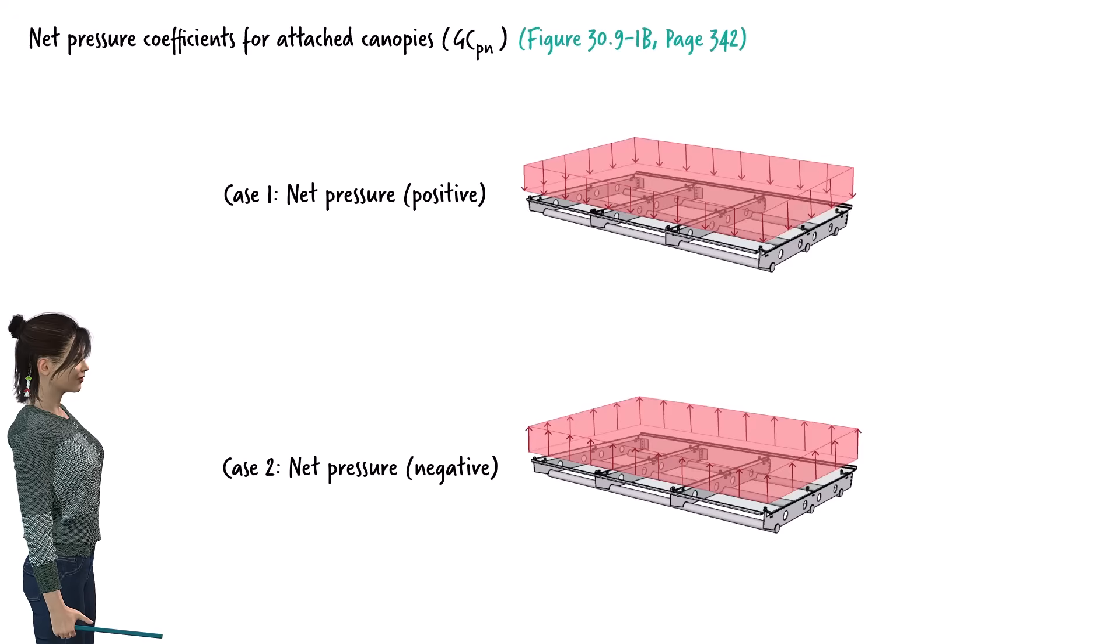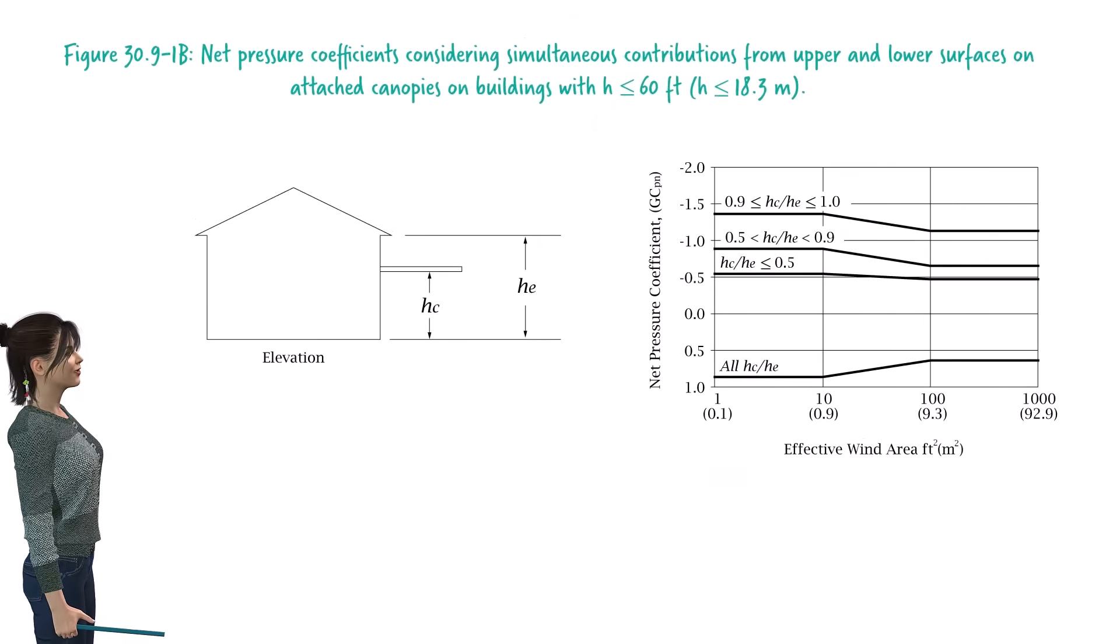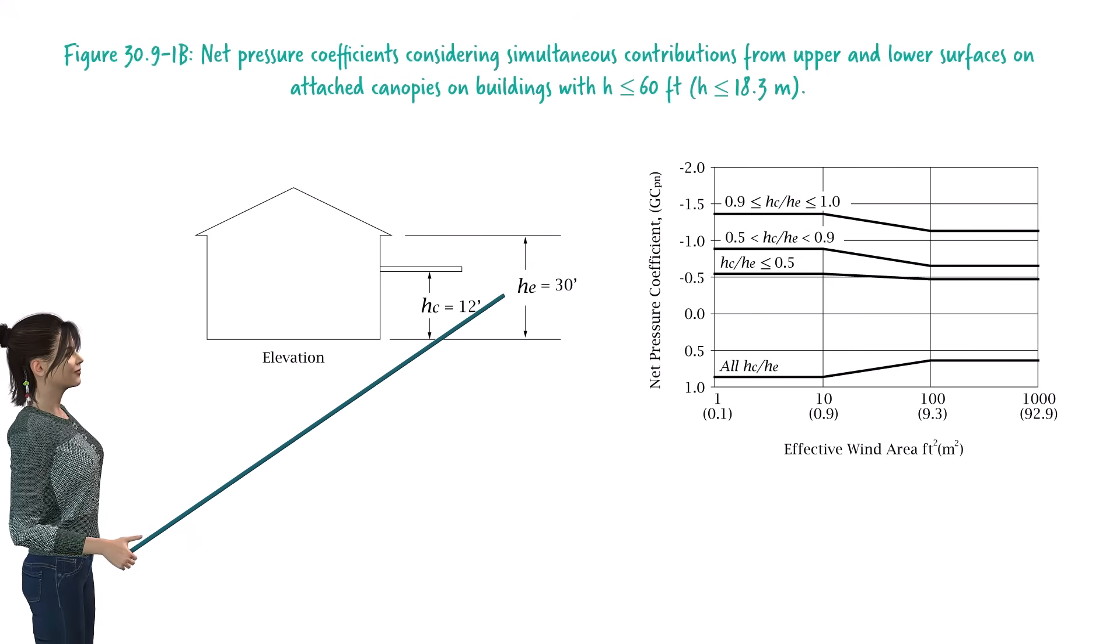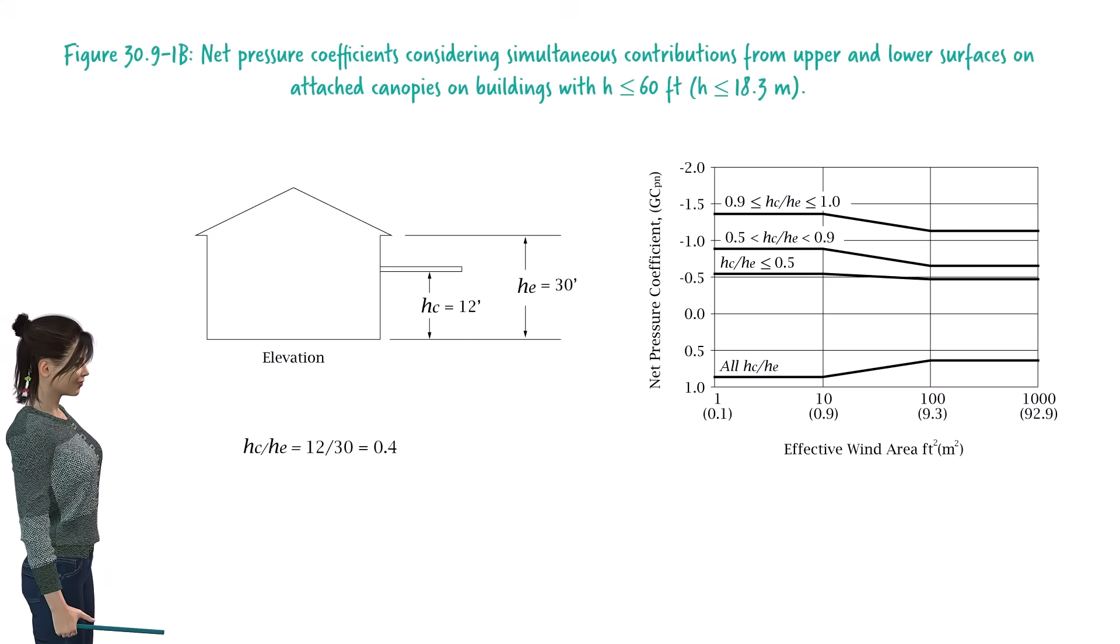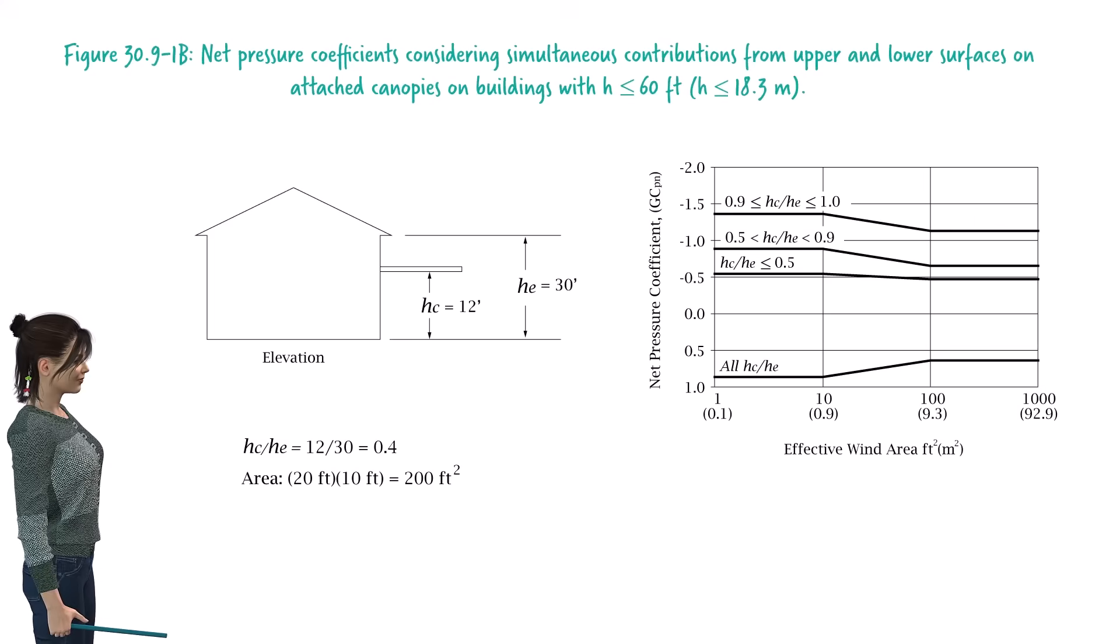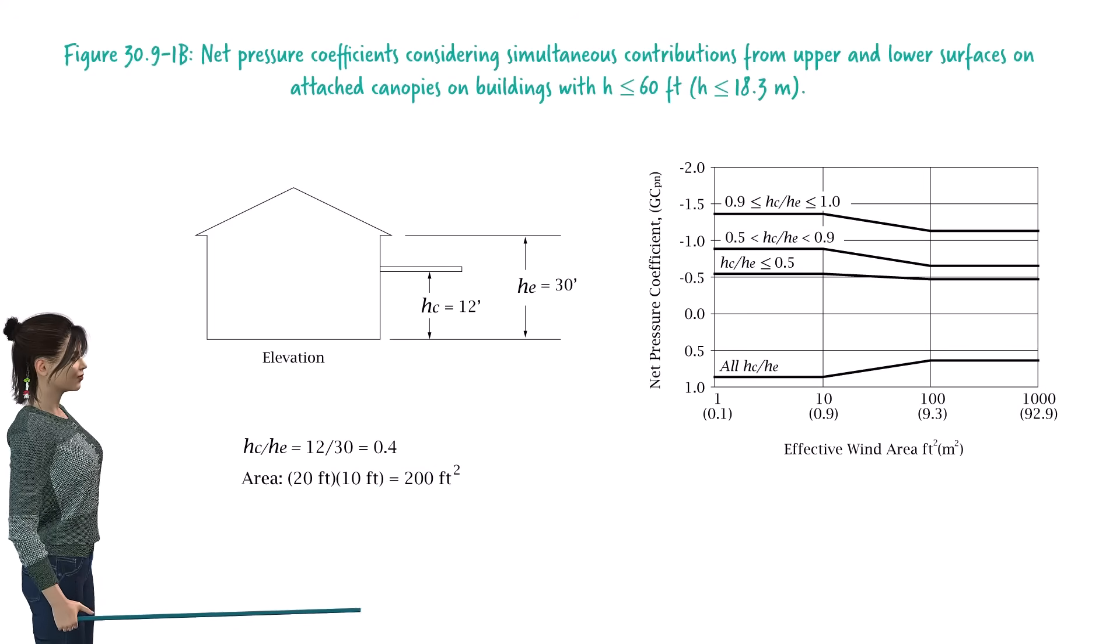The net positive and negative pressure coefficients for canopies attached to buildings less than 60 feet high are provided in figure 30.9-1B. In our case, H sub C is 12 feet, and H sub E is 30 feet. The ratio of H_C to H_E is 0.4, and the area of the canopy is 200 square feet. We can use this graph to determine the positive and negative net pressure coefficients based on the area of the canopy and the H_C to H_E ratio.